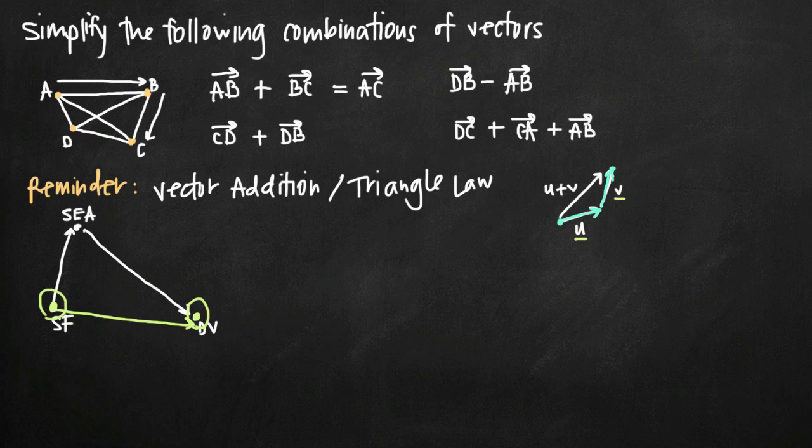Another way to think about that mathematically, one trick I like to use, notice here we have the vector AB plus the vector BC. Well, B is this common midpoint of the vectors. If we just cancel this common point here, what we see is that we're going from A directly to C, and we skip this stop, the stop and change planes at B. We skip that step, we go directly from A to C. So that's another way to look at it quickly.